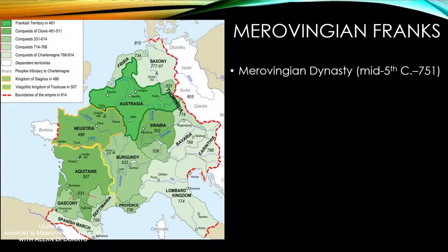The Merovingians were noted, interestingly, for the wearing of long hair — the Merovingian kings became known as the 'long-haired kings.' The idea was that long hair was attached to power, strength, and authority, probably tied to pagan customs of the past. So if you were to be king, you needed long hair. And if you were ever removed from the throne, they would often shave your head and send you off to a monastery.